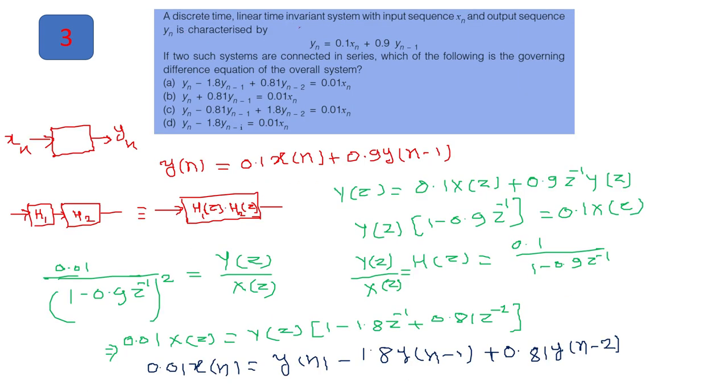Next question number 3. A discrete time LTI system is given with the input x(n) and output y(n) or this will represent you as a difference equation. If two such systems are connected in series, which of the following is the governing difference equation of the overall system? Now we believe that this will give you input and output and this is our system. And you can write this equation in this form, where Y of n is y(n), 0.1 x(n) is x of n, plus 0.9 Y of n-1 is Y subscript n-1.